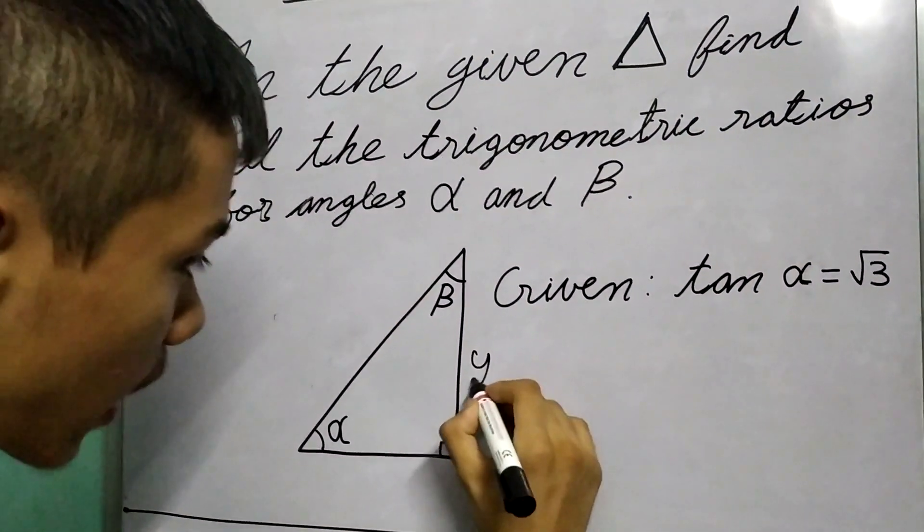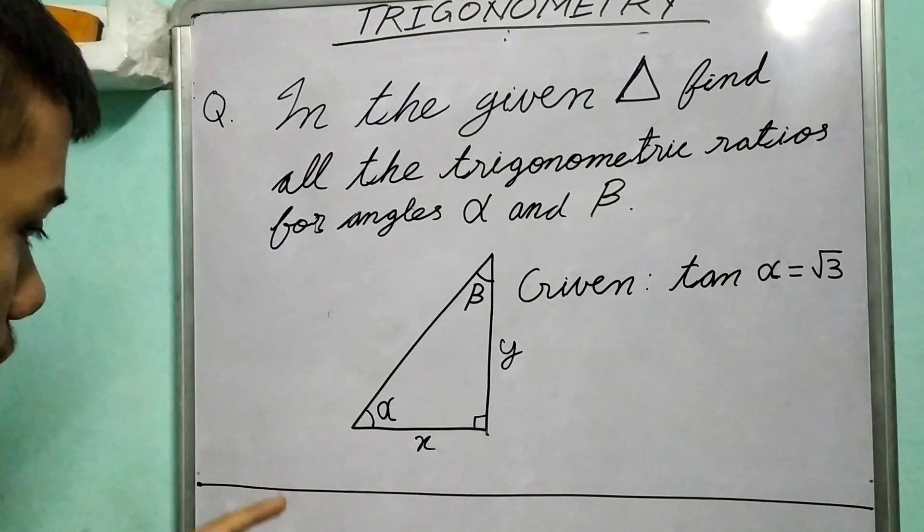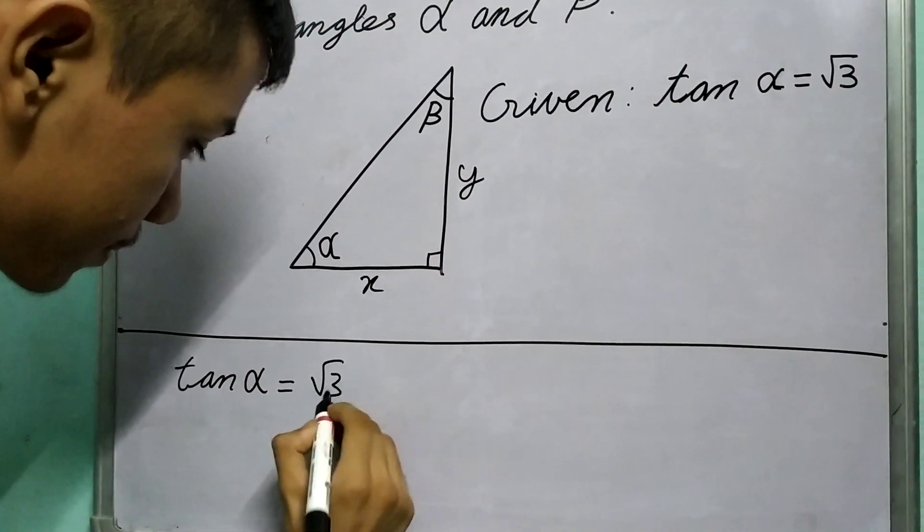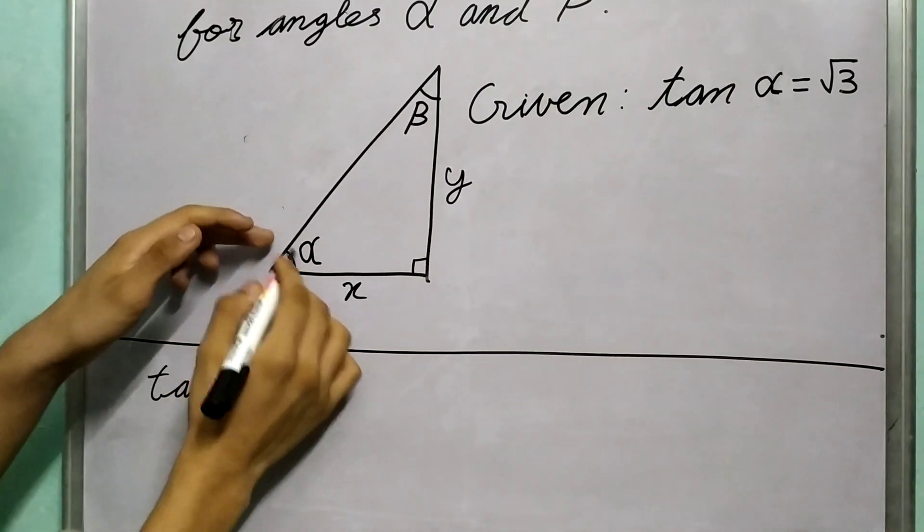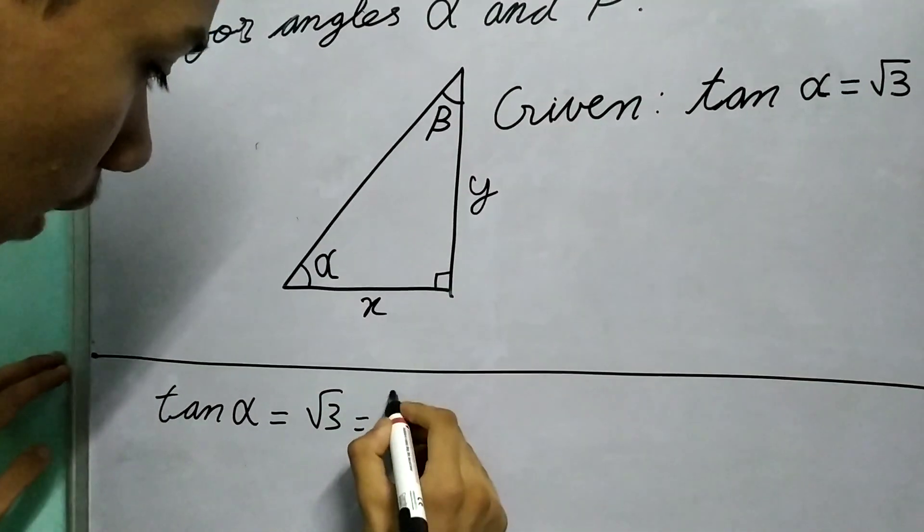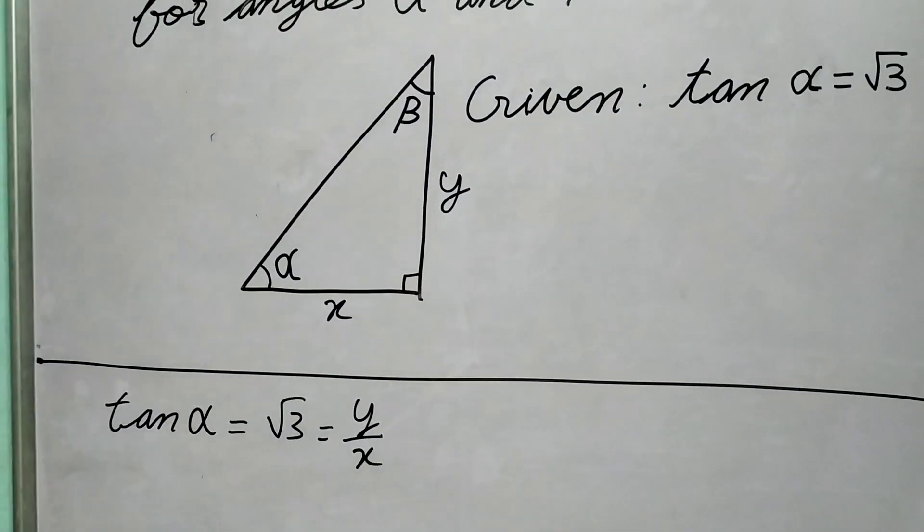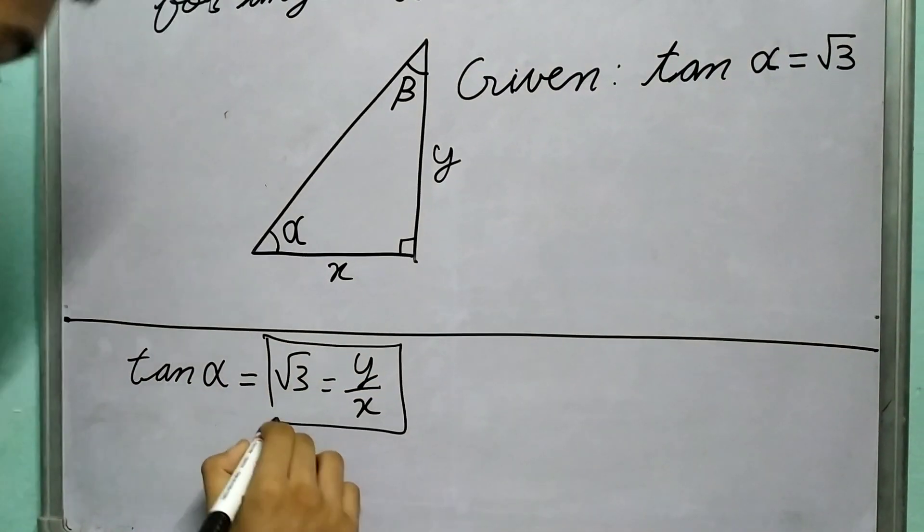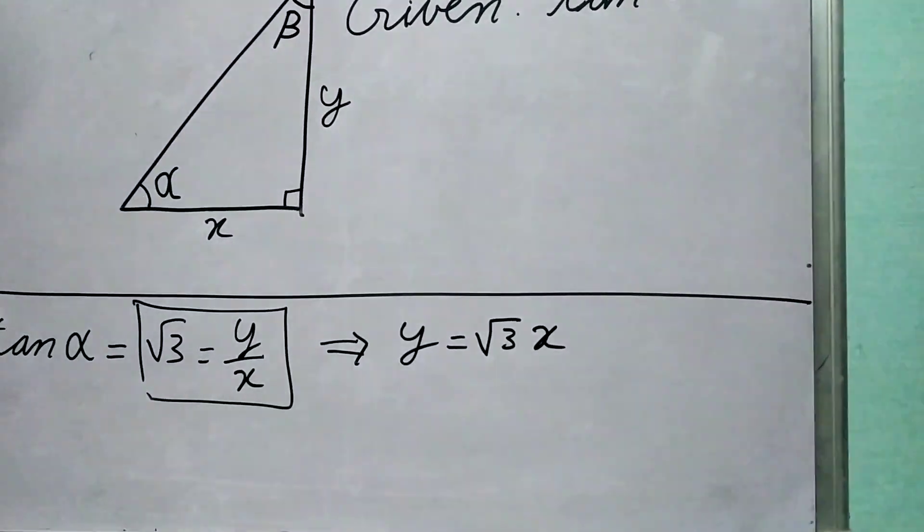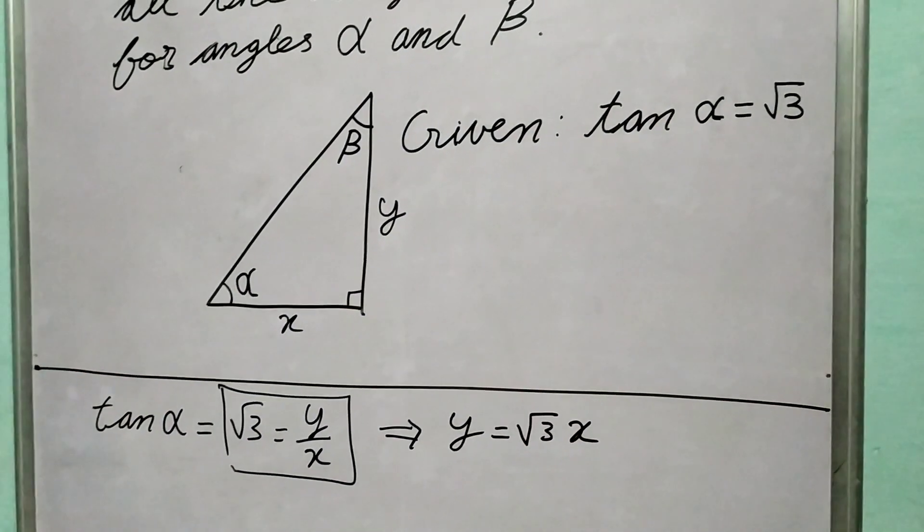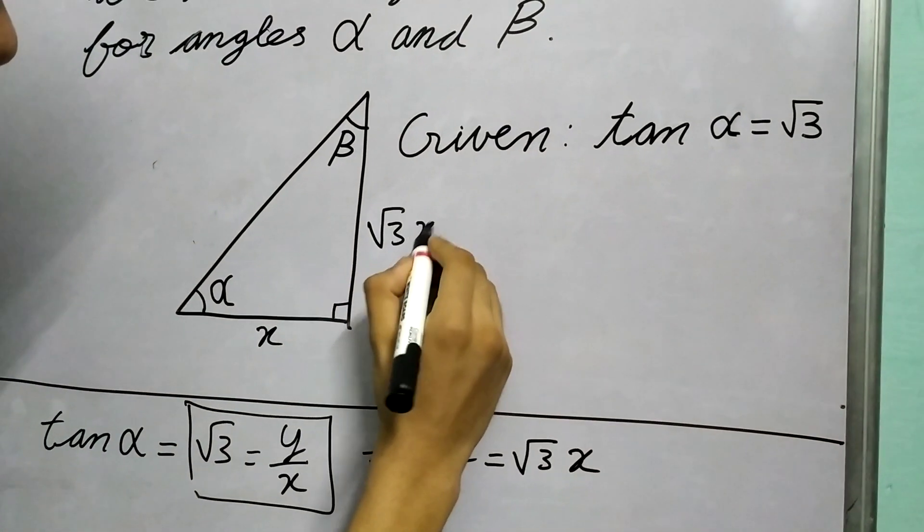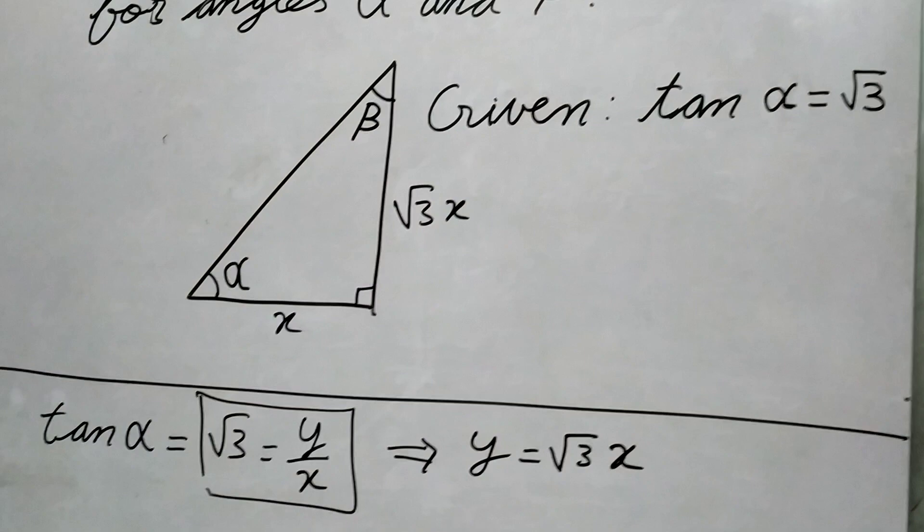First, let's label this side as y and this side as x, just a matter of convenience. We know that tan α = √3, which is given in the question. Now, tan α is the ratio of perpendicular to base, P/B. In this case, P is y and B is x. So y/x = √3. From this, we can say that y = √3x, where the root is only over 3. Now we can replace y with √3x.